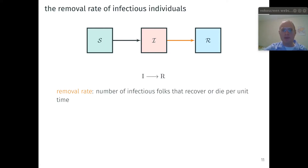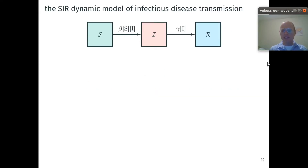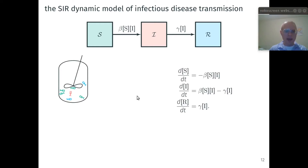Intuitively, if the number of infectious folks doubles, so does the incidence rate of the disease. And if the number of susceptible folks doubles, that's more people for the infectious folks to infect, and the incidence rate also doubles. Second, we can develop a kinetic model for the removal of infectious individuals and model the removal rate — the number of infectious folks to recover or die per unit time — as a first-order decay with rate constant gamma. This flow diagram summarizes the two reaction models under the SIR model, with each arrow depicting per capita flow rates of individuals from one compartment to another.